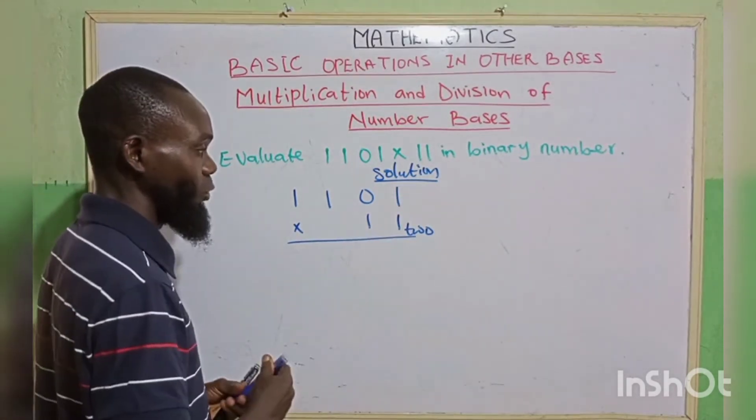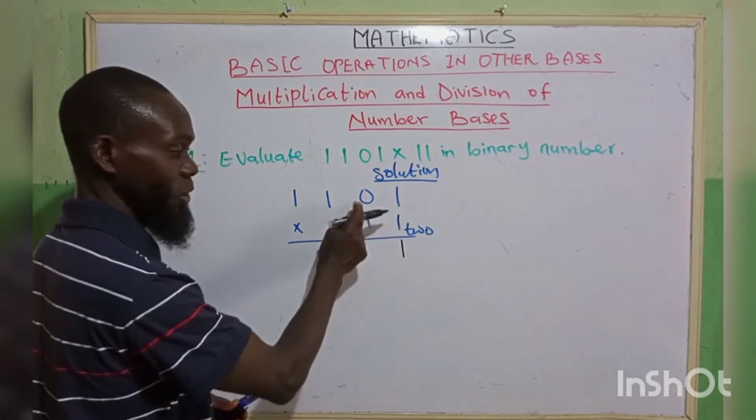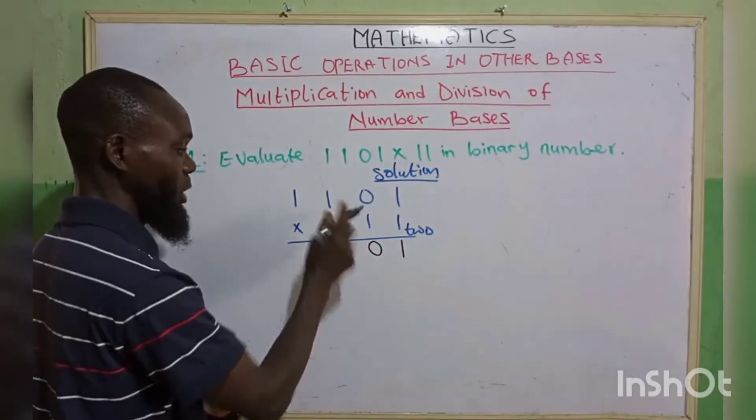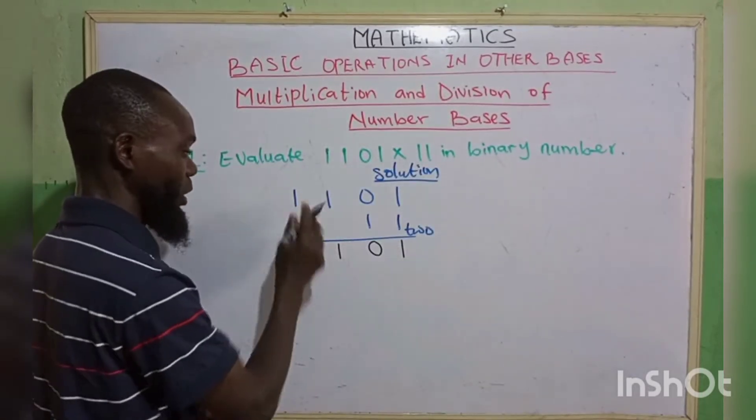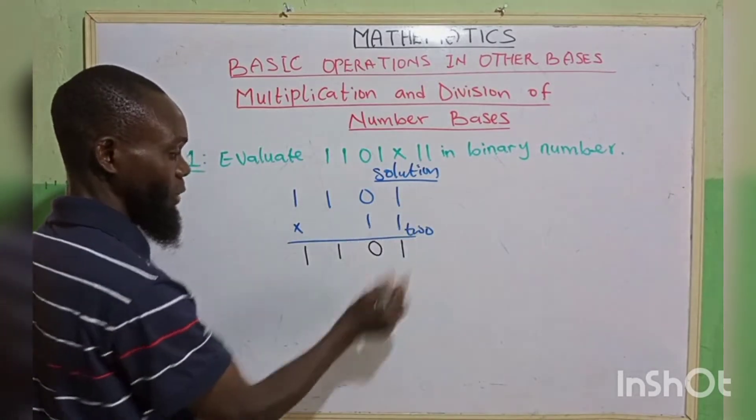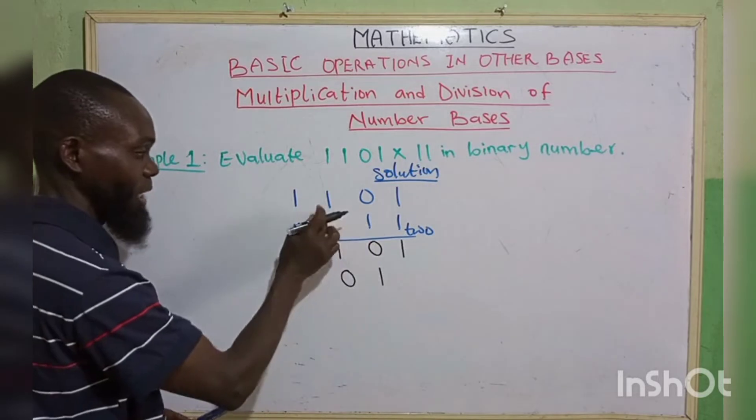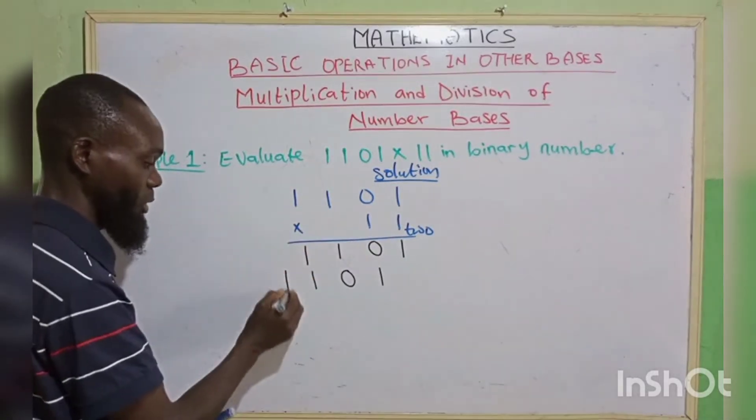1 times 1, we have 1. 1 times 0, 0. 1 times 1, 1. 1 times 1, 1. All these values are below 2. 1 times 1, we have 1. 1 times 0, 0. 1 times 1, 1. 1 times 1, we have 1.